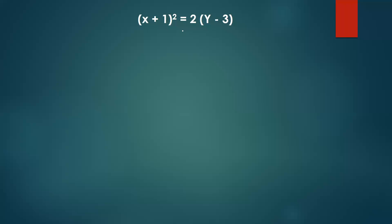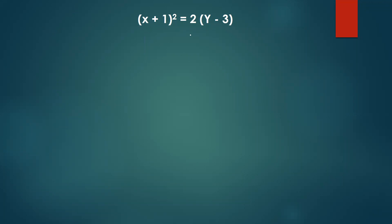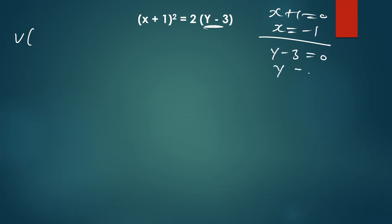This question is also a parabola, but in this case the variable which is squared is x, so we expect our curve to either face up or down. Since the equation is already in standard form, there's no need to complete the square. You simply have to find the vertex first: equate (x+1) to zero to get x = -1, then equate (y-3) to zero to get y = 3. So the vertex is (-1, 3).